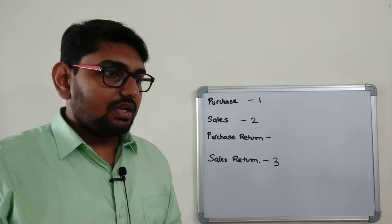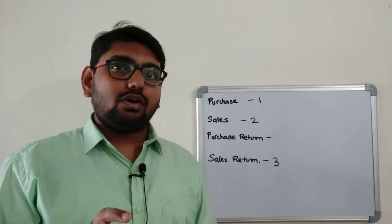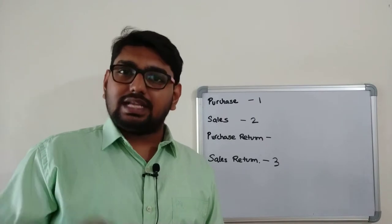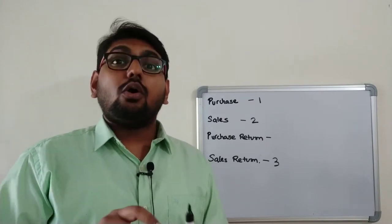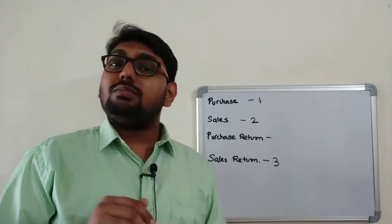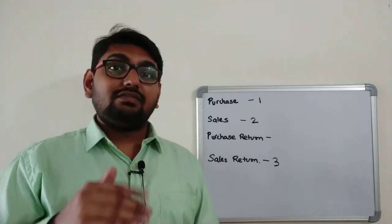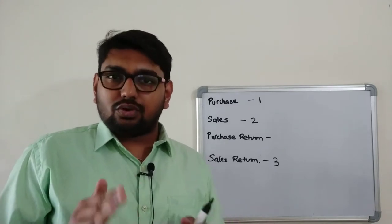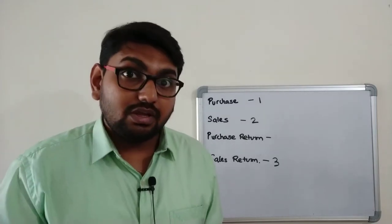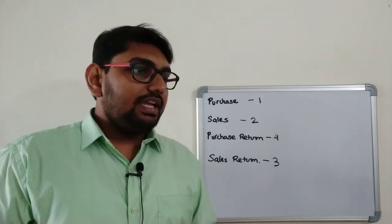Fourth transaction: goods returned to Drew worth rupees 7,000 gross. Now, whenever you make any subsidiary book you are always supposed to write the net amount, not the gross amount. Net amount means gross minus any kind of discount. We will handle the calculation when we write the transaction into the books. As of now, since I am returning the goods to Drew, whom I had purchased from in the past, this is a purchase return transaction.